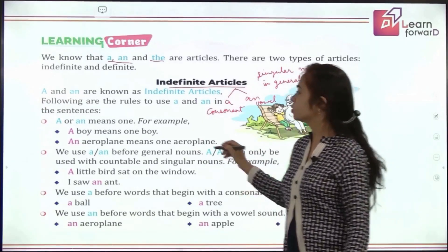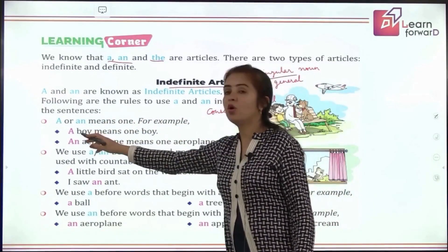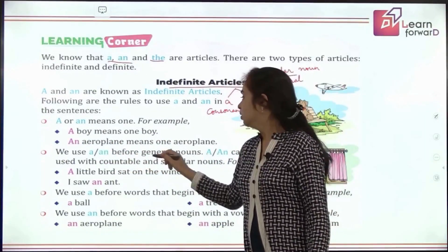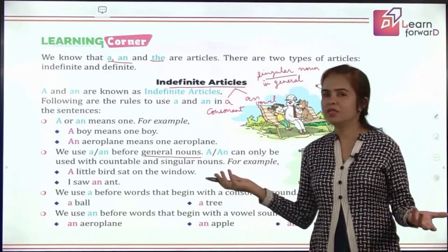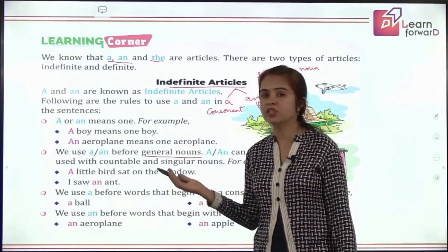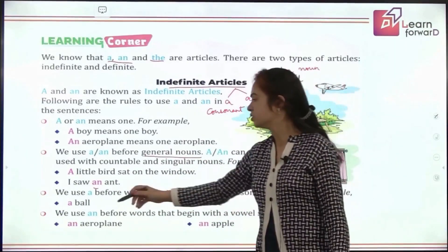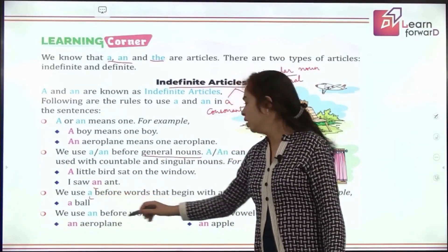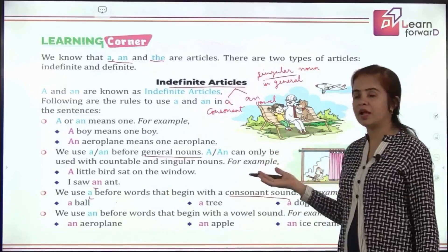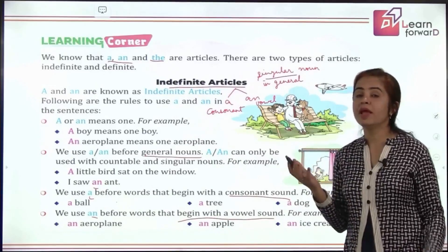A and an are used before singular nouns in general. An means one. A boy — any boy; an aeroplane — one aeroplane, any aeroplane. We use them before general nouns: a little bird means any small bird, not any particular one. I saw an aunt means any aunt — in general. We use a before a consonant sound like a ball, a tree, a dog, and an before the vowel sound.